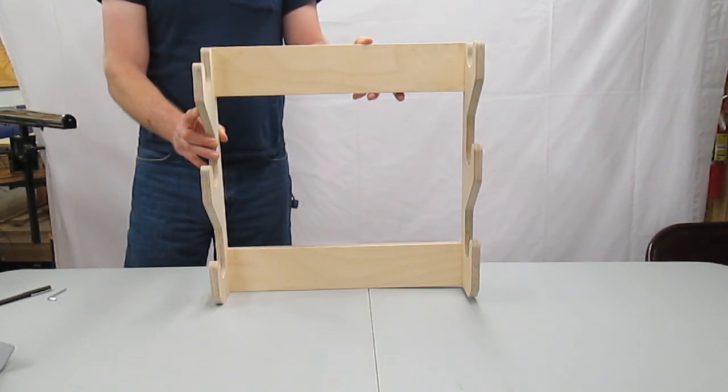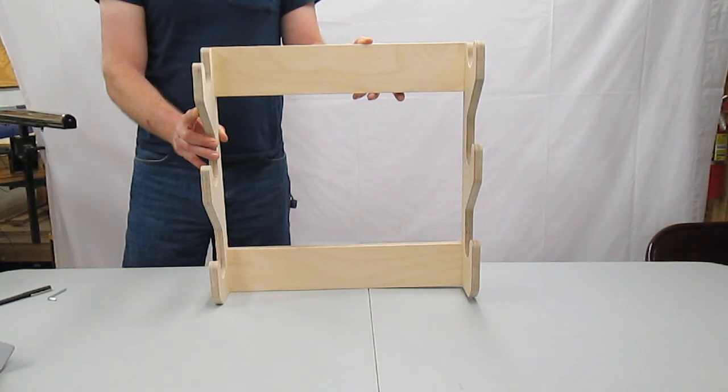Four screws into two studs is recommended but if the rack only crosses one stud then two screws through each cross brace into the stud along with drywall anchors on the other side of the rack will be sufficient.